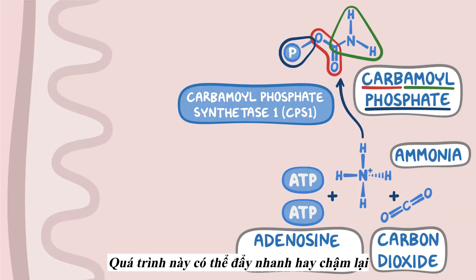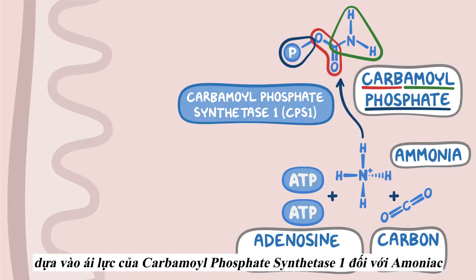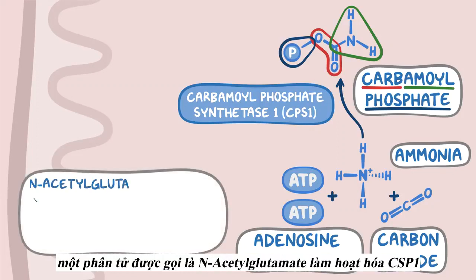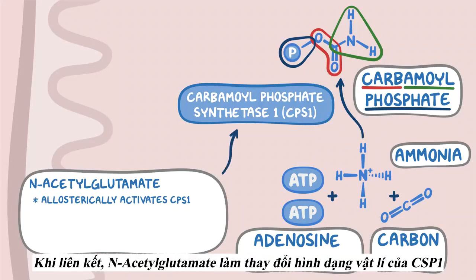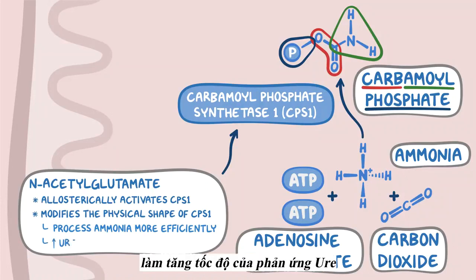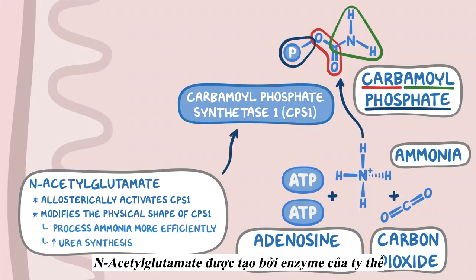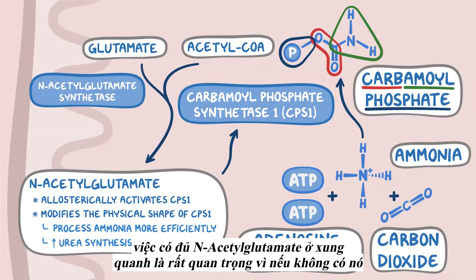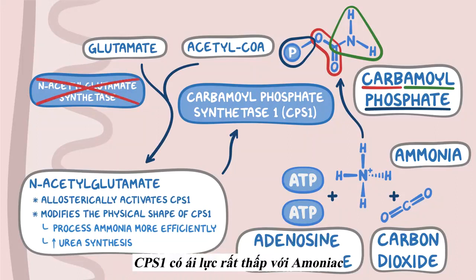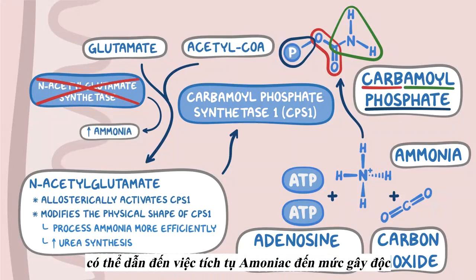This process can be sped up or slowed down based on the affinity of carbamoyl phosphate synthetase-1 for ammonia. A molecule called N-acetylglutamate allosterically activates CPS-1, meaning that it binds to CPS-1 on a site different from where ammonia binds. When it binds, N-acetylglutamate modifies the physical shape of CPS-1 so that it can process ammonia more efficiently, increasing the rate of urea synthesis. N-acetylglutamate itself is made by a mitochondrial enzyme called N-acetylglutamate synthetase, which combines glutamate and acetyl-CoA. Having a genetic deficiency in N-acetylglutamate can lead to ammonia building up to toxic levels.